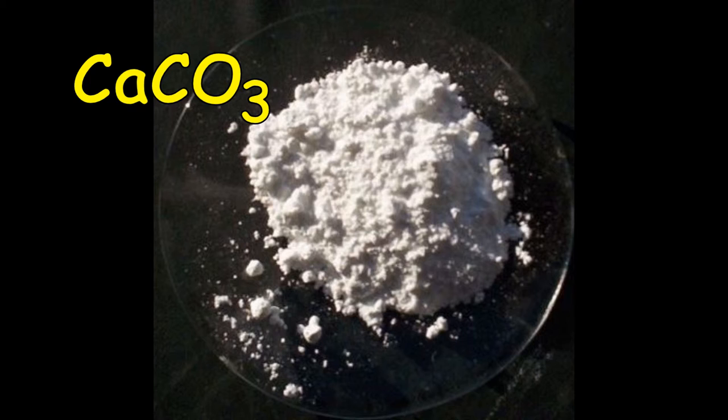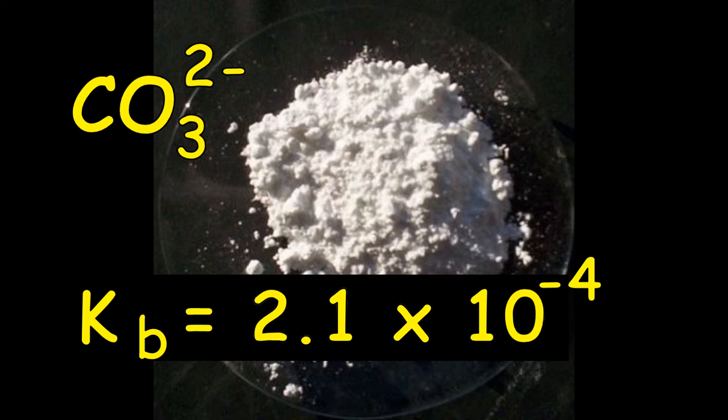The antidote is to sweeten the soil using agricultural lime containing calcium carbonate. I use dolomite lime, which also contains magnesium, and put eggshells on my compost heap. Calcium carbonate is insoluble and so has a slow release effect.